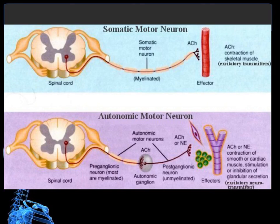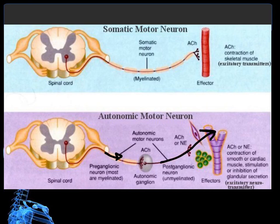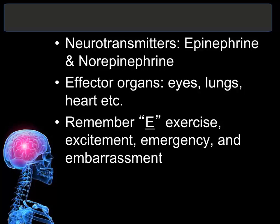Because in the sympathetic division the ganglion is near the spinal cord, it has a short preganglionic neuron and a long postganglionic neuron — it extends away from the spinal cord to attach to whatever organ it is controlling. The neurotransmitters involved in the sympathetic division are epinephrine and norepinephrine. The effector organs specifically for the sympathetic division include the eyes, the lungs, the heart, and muscle function.